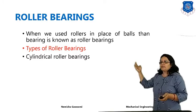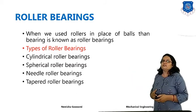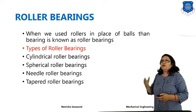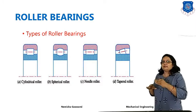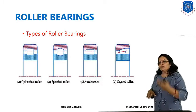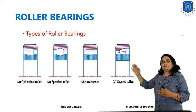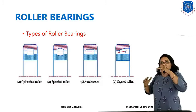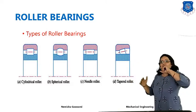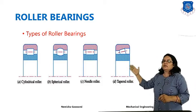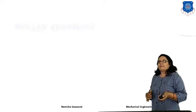Roller contact bearings are basically of four types: first is the cylindrical roller bearing, second is the spherical roller bearing, third is the needle roller bearing, and fourth is the tapered roller bearing. You can see all types at one place in the diagram — cylindrical shape, spherical shape, needle-like shape, and tapered at an angle rather than horizontal.